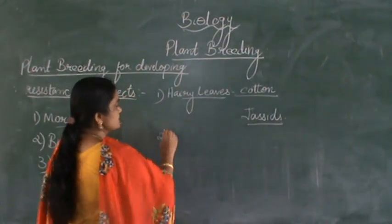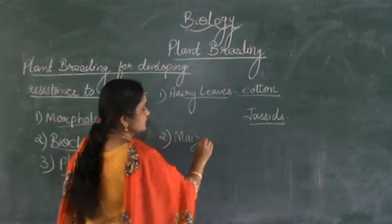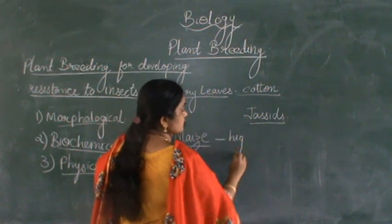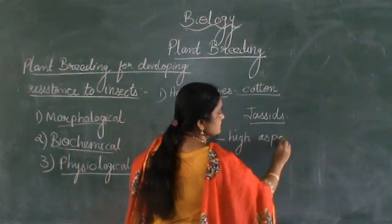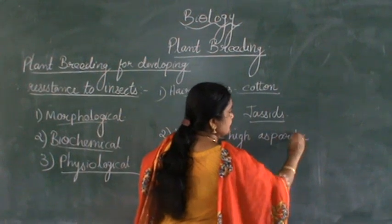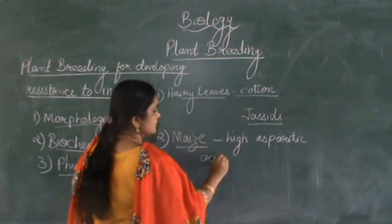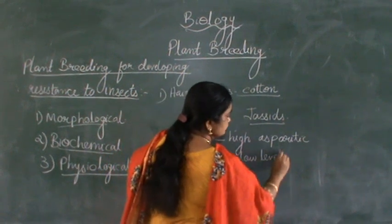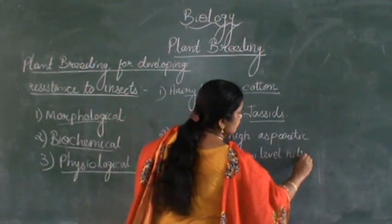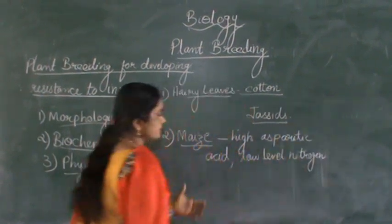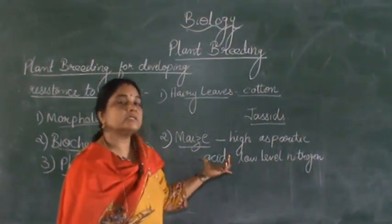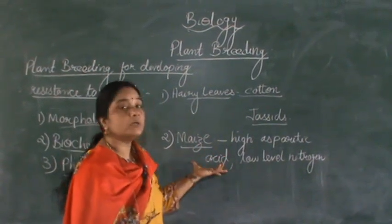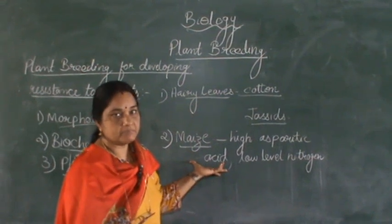Another example is in maize. Certain varieties of maize have high aspartic acid content in them — that is a biochemical reason. The presence of high aspartic acid, or a very low level of nitrogen in the plant, causes certain insects like the sawfly to avoid eating maize, which of course is very rich in protein.